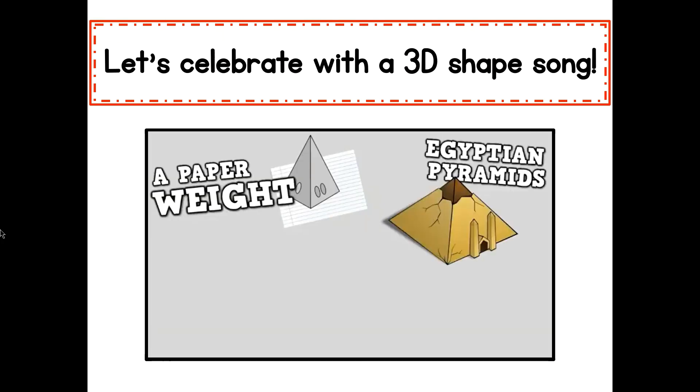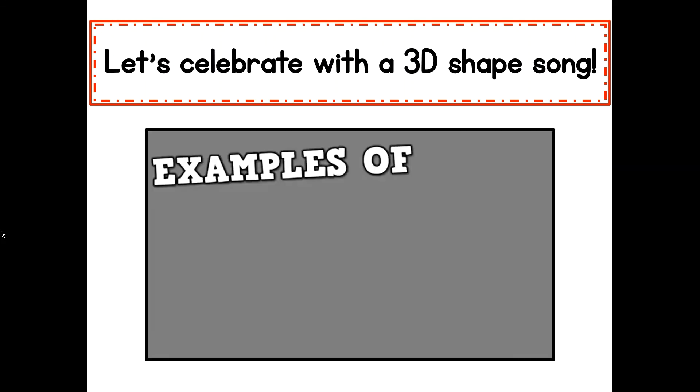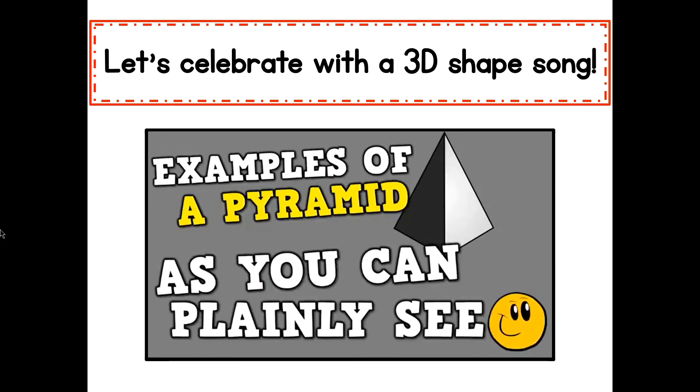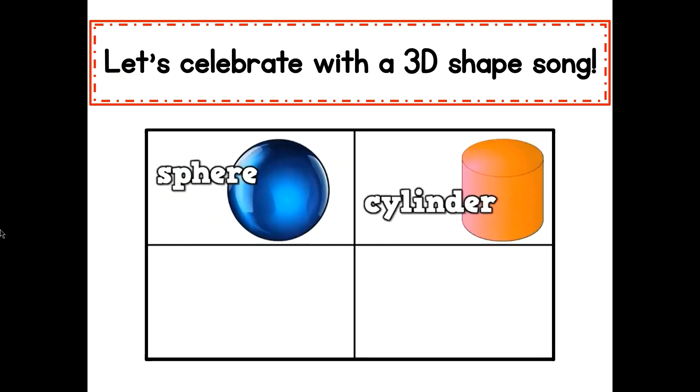A paperweight, Egyptian pyramid, and some tents would be examples of a pyramid as you can plainly see. Here are the 3D shapes that I know. A sphere, a cylinder, a cube, and a cone.